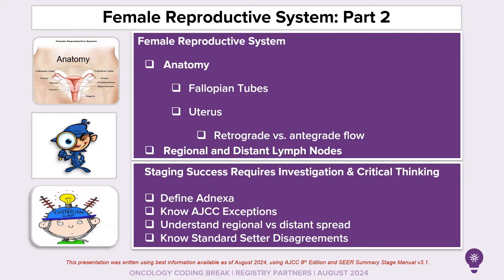She'll discuss the lymph nodes that are regional to the uterus, which do differ slightly from what we learned were regional to the ovary. Melissa will define adnexa for us — usually a source of confusion and difficult to determine when you do or don't have adnexal involvement. And then after Melissa wraps up, I will discuss AJCC and SEER summary staging and highlight exceptions and disagreements between the standard setters.